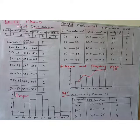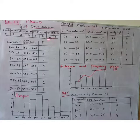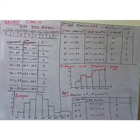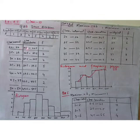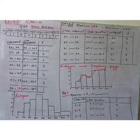Question number 3 asks us to draw a histogram where different class intervals and their corresponding frequencies are given. In the solution, we write the class intervals and then their class boundaries. To obtain class boundaries, we subtract 0.5 from the first lower class limit, getting 19.5, and add 0.5 to the upper class limit, getting 24.5. Similarly, this continues up to the last interval: subtracting 0.5 from 50 gives 49.5, and adding 0.5 gives 54.5.